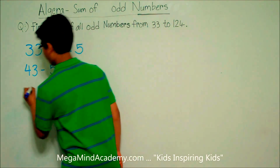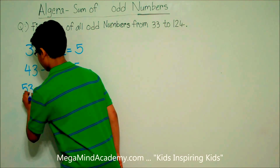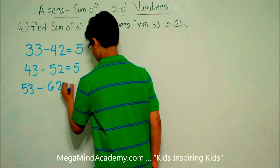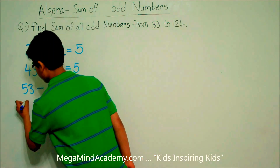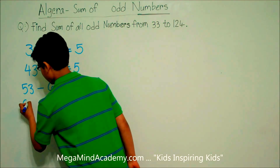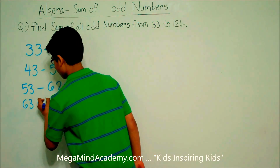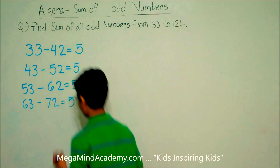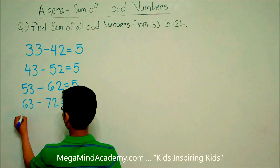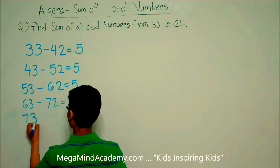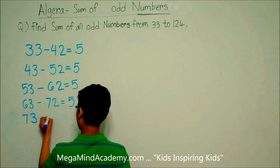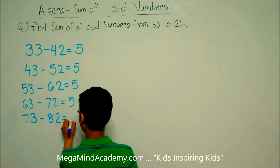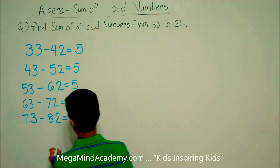From 53 to 62, there are 5 odd numbers. From 63 to 72, there are 5 odd numbers. From 73 to 82, there are 5 odd numbers.